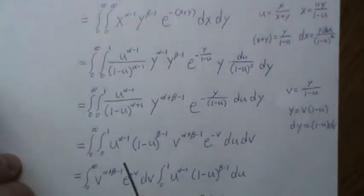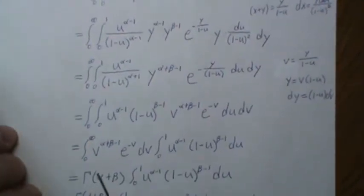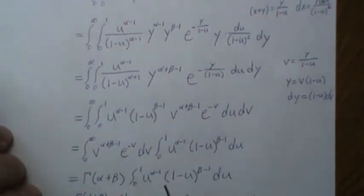Well, this here kind of looks like a gamma distribution, zero to infinity. Well, it is. That is gamma of alpha plus beta. And then this right here is whatever it is.